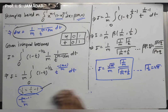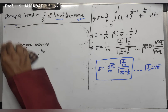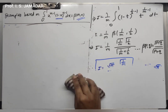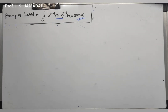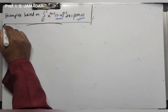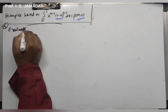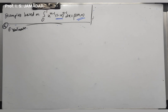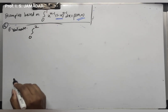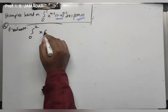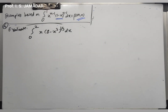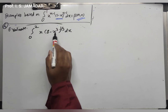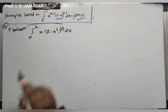Example number 4: Evaluate the integration from 0 to 2 of x times (8-x³)^(1/3) dx. This is similar in structure to example 1 — there we had the term (n-x), and here we have (8-x³). Our requirement is to get the form (1-t), so we need an appropriate substitution.